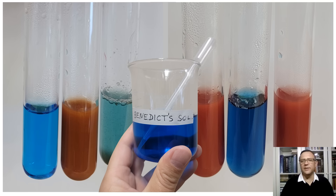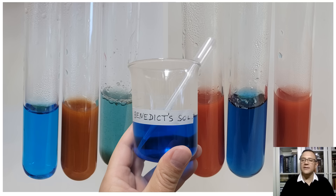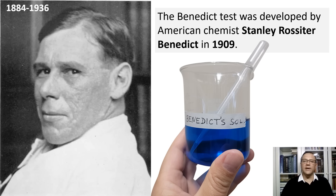In conclusion, the qualitative Benedict test is a valuable and straightforward method for determining the presence of reducing sugars in various samples. By observing the color change from blue to green, yellow, orange, or red upon heating, one can determine the presence and approximate amount of reducing sugars. This test is widely used in educational settings and research laboratories for its simplicity and effectiveness. Through this practical exercise, we have gained a better understanding of the chemical properties of reducing sugars and their reactivity with Benedict's reagent. The Benedict test was developed by American chemist Stanley Benedict in 1909.